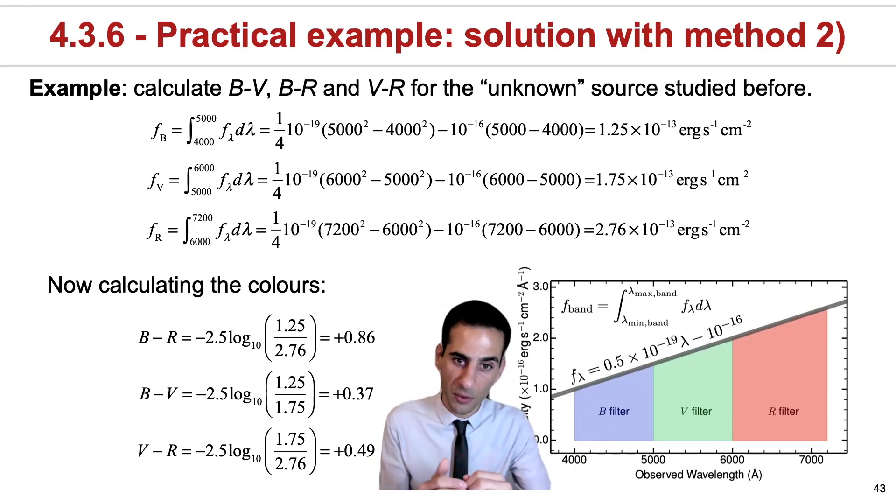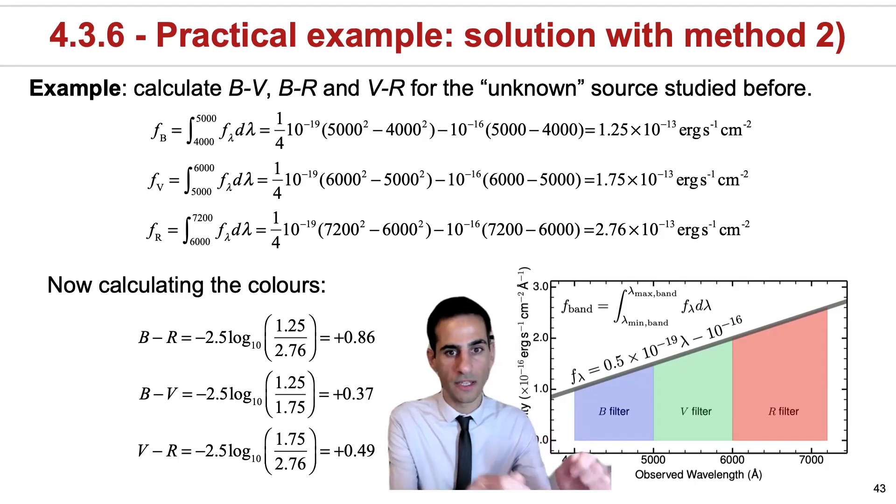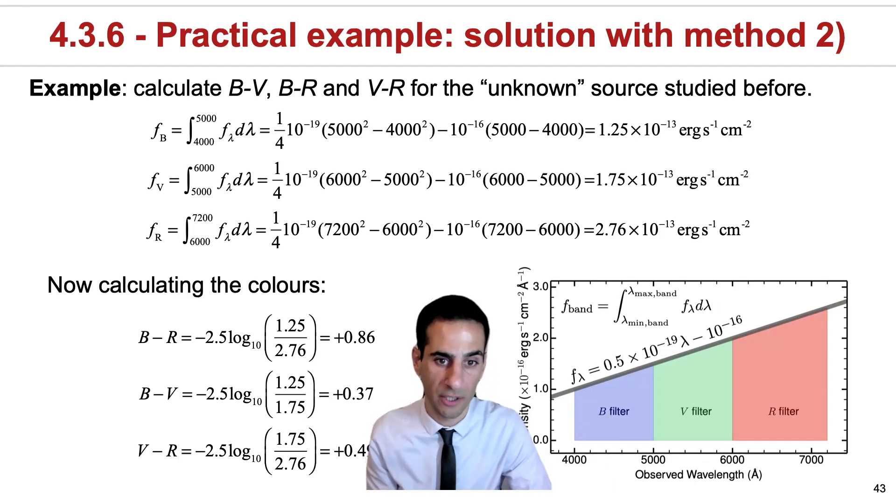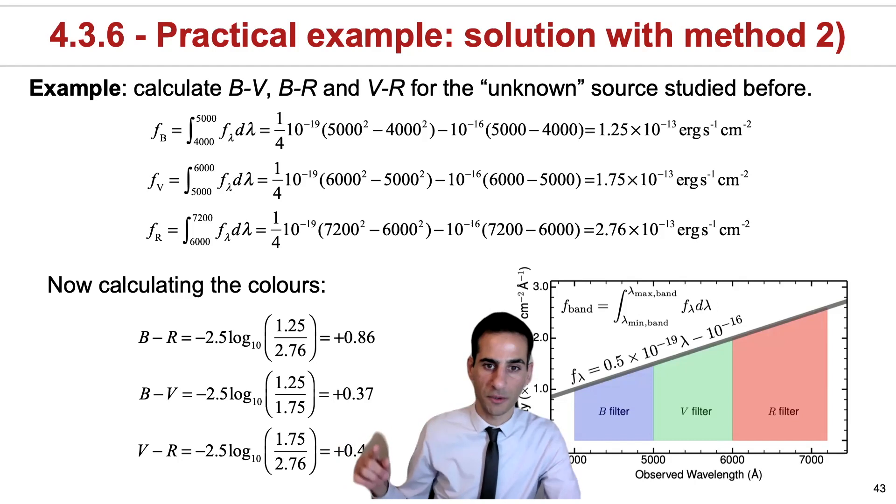if a source is rising toward the red, if you use a longer baseline, the magnitude difference will be larger. This is very important. In this case, the source will be red in any magnitude difference because of the way we define it.